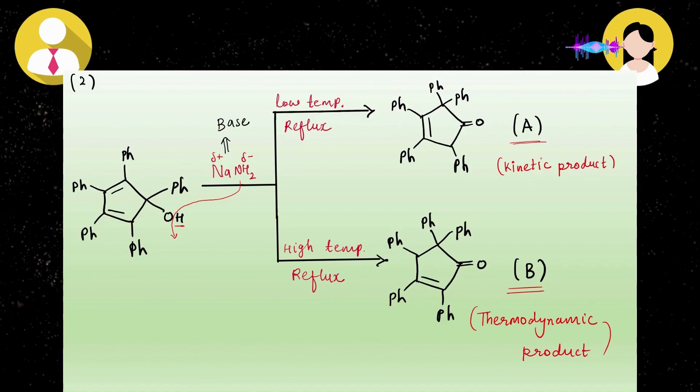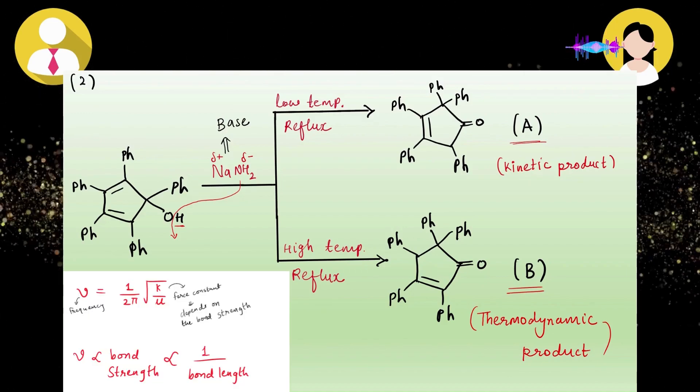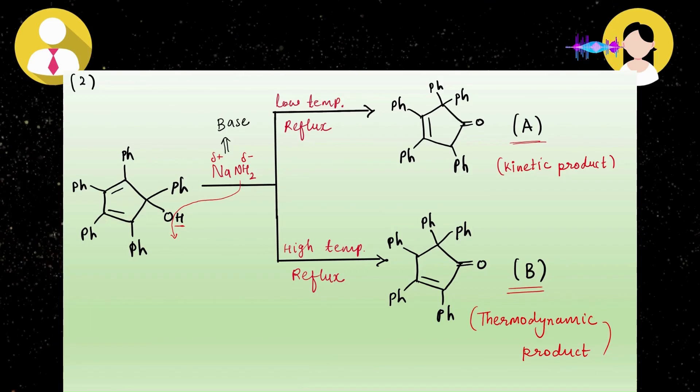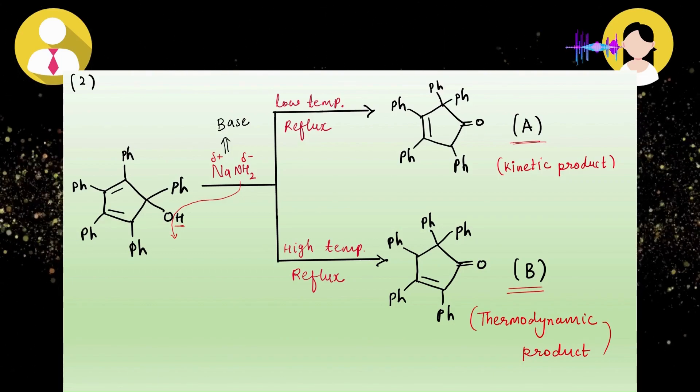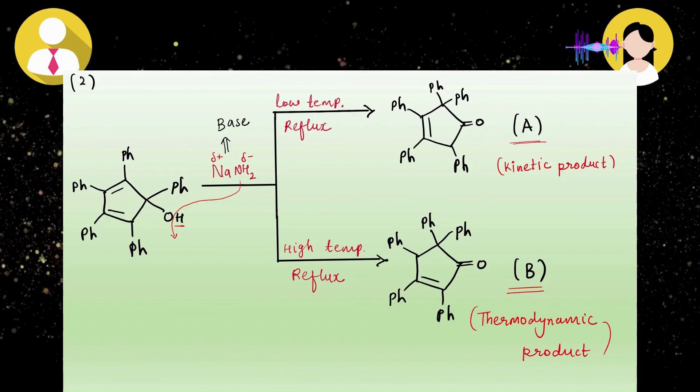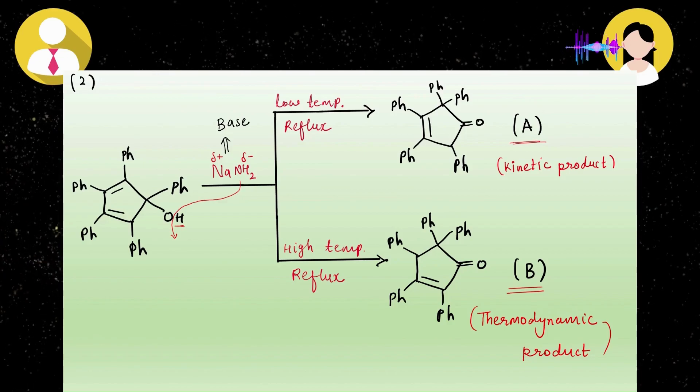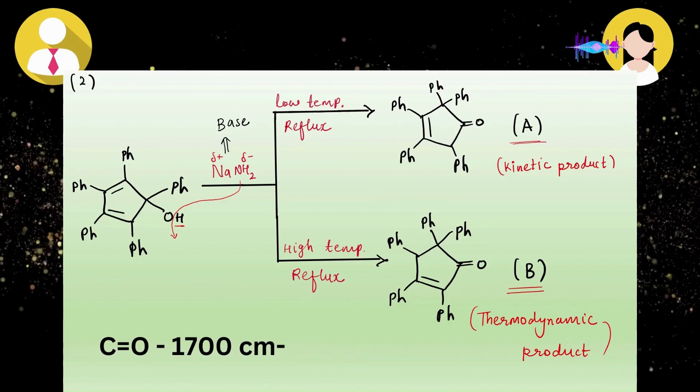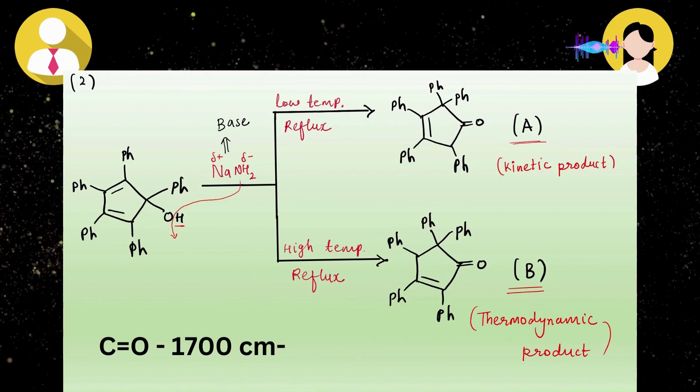On the basis of this equation, we can say that CO stretching frequency is inversely proportional to the bond length of CO. Here bond length is increasing, which means stretching frequency will decrease. CO stretching frequency of product B is less than product A because of the resonance.